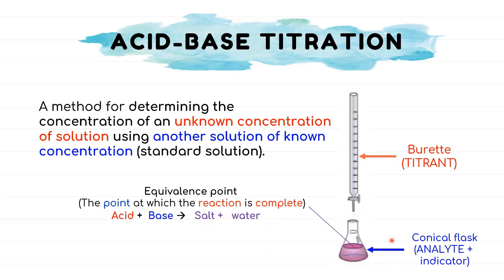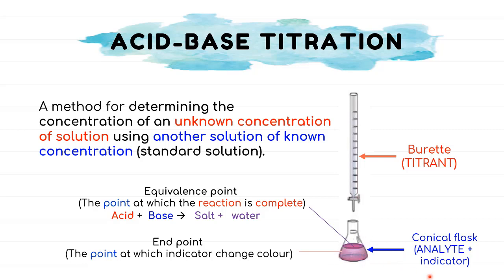The titration will immediately stop at the end point, which can be determined from the change in color of the solution caused by the indicator placed in the analyte. The equivalence point occurs before the end point, and the end point occurs after the equivalence point. Hence, a suitable indicator with an end point close to the equivalence point should be used.